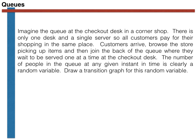Any customer, when they arrive in the shop, will browse the store for a while picking up items. Then, once they are done, they will join the back of the queue and wait to be served one at a time at the checkout desk. The number of people in the queue at any given time is a random variable, which we are going to model using a continuous time Markov chain, because customers can arrive at any time and the amount of time each customer takes to get served is a random variable.